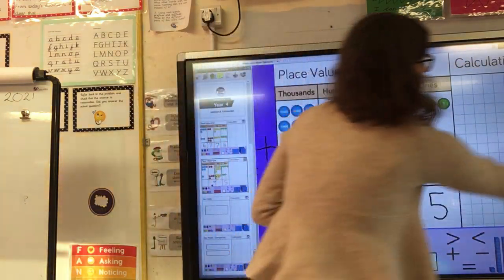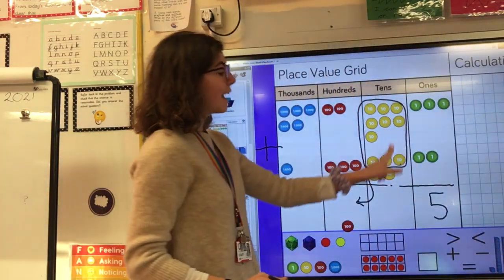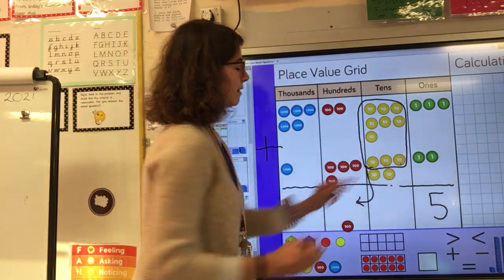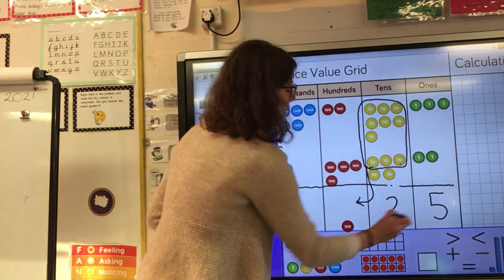Now I can see that after I've grouped those 10 tens and moved them into the hundreds I'm left with two tens. So I write my value of two tens.